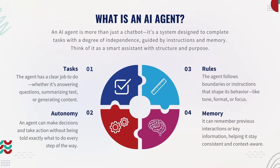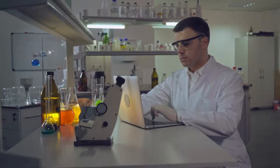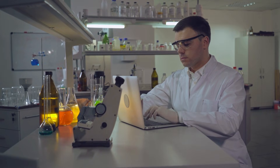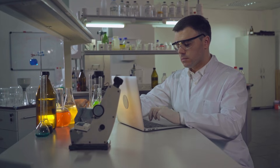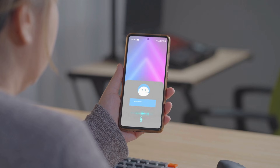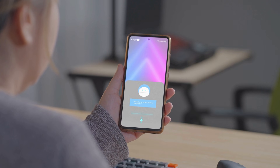So what exactly is an AI agent? Think of it like a smart coworker that you build. It has a clear task, some autonomy, and a set of rules to follow. And it even has memory to recall what matters most. AI agents are already powering research tools, internal co-pilots, and customer experiences across industries. Understanding how to build one puts you right at the center of where AI is going — not just using it, but creating with it.